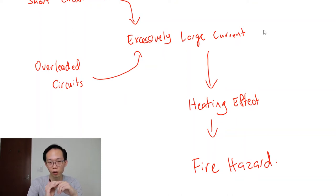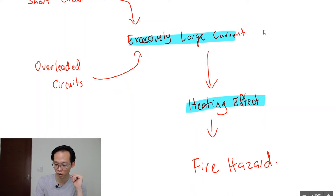Now as you have learned before, currents have a heating effect. So when there's an excessively large current, there will be a very large heating effect as well. And when there's an excessively large heating effect, this can lead to a fire hazard.